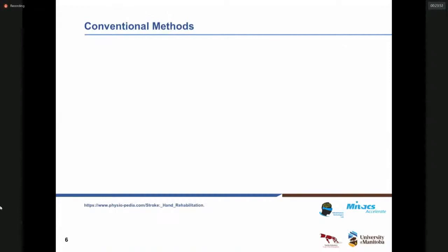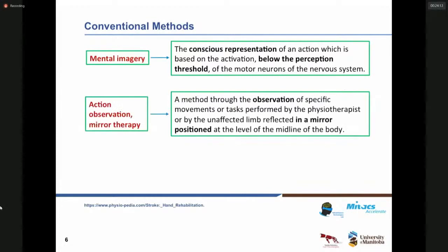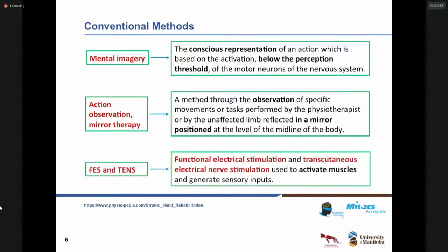There are various conventional methods for treating hand rehabilitation. Mental imagery is one of the conventional methods, which is the conscious representation of an action based on the activation of the motor neurons of the nervous system. Mirror therapy is a method through the observation of specific movements or tasks performed by the physiotherapist or by an affected limb reflected in a mirror positioned at the level of the midline of the body. Functional electrical stimulation and transcutaneous electrical nerve stimulation are used to activate muscles and provide general sensory inputs.